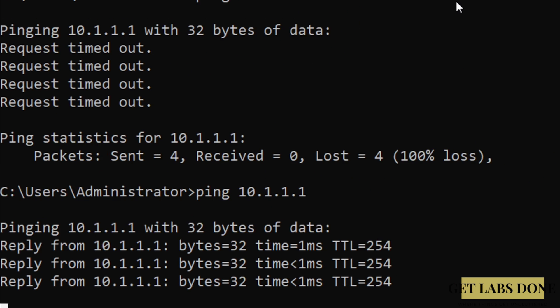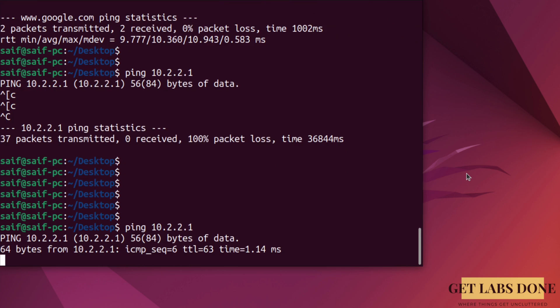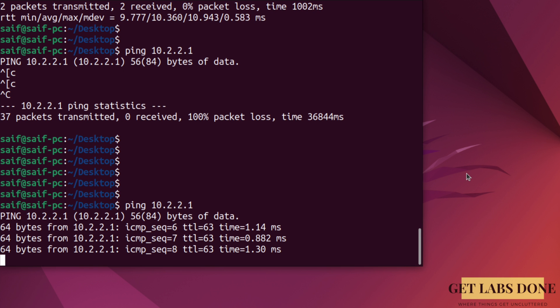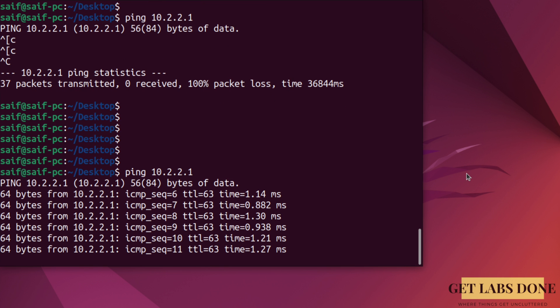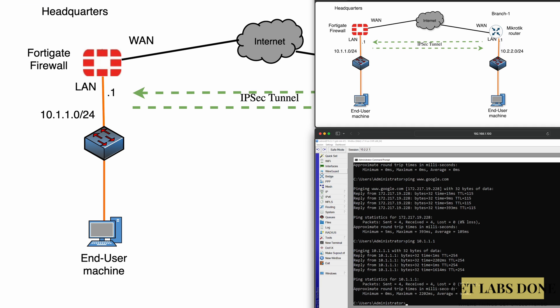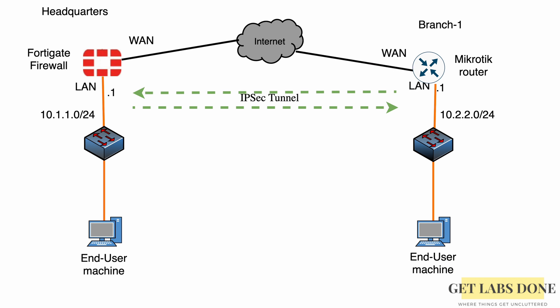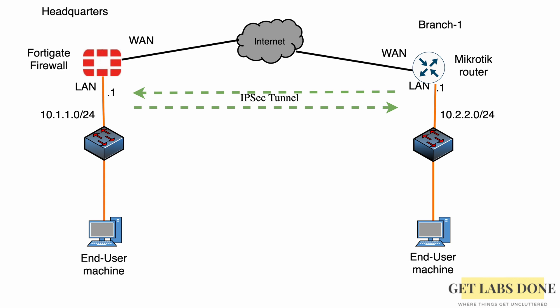Now let's verify traffic. From the Branch 1 Windows Server, pinging 10.1.1.1 — which previously timed out — now gets successful responses. From the FortiGate-side Ubuntu host, pinging the MikroTik LAN also gets a successful response. We have successfully built an IPsec site-to-site VPN tunnel between FortiGate and MikroTik and verified traffic in both directions. If you found this video useful, please like and subscribe, and leave any questions in the comments below.